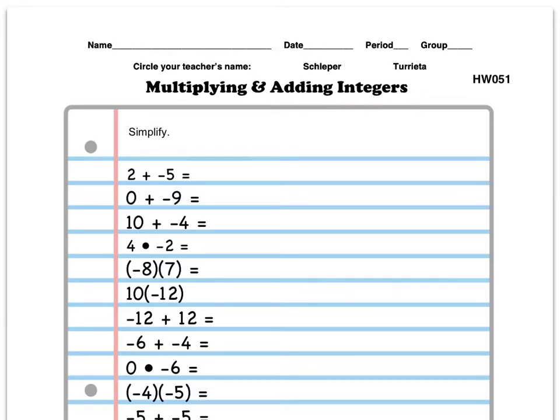We're going to go ahead and jump right in. The instructions say simplify. So we'll just do a couple here. There's a few addition problems, there's a multiplication, there's a multiplication. I'm going to go ahead and do this first one here, 2 plus a negative 5.